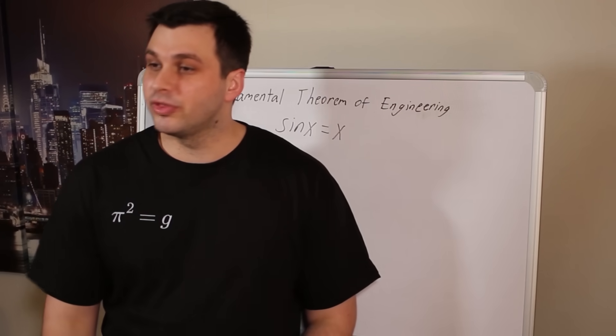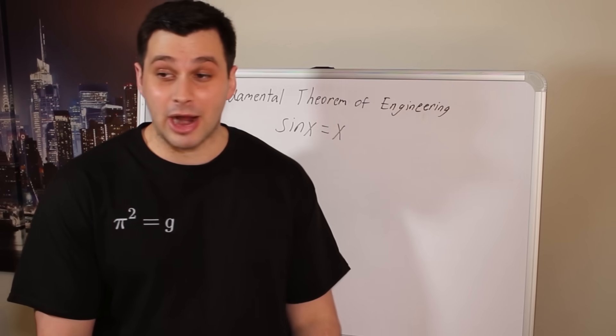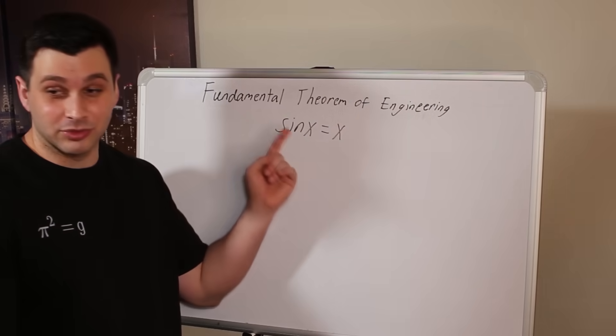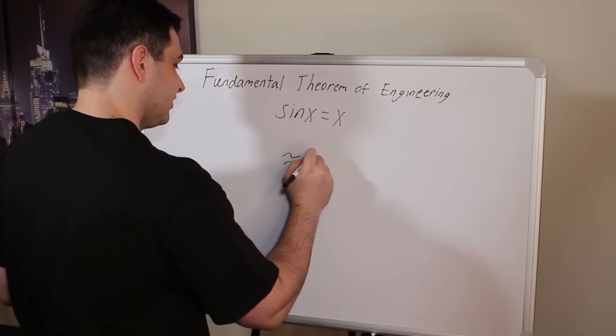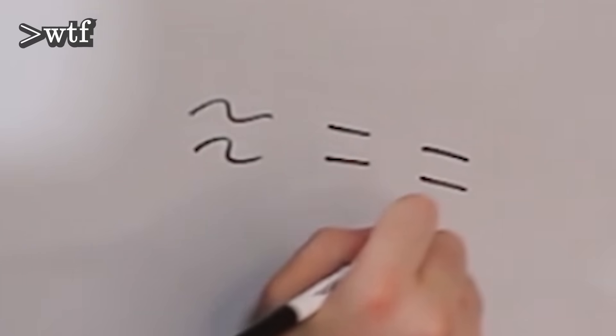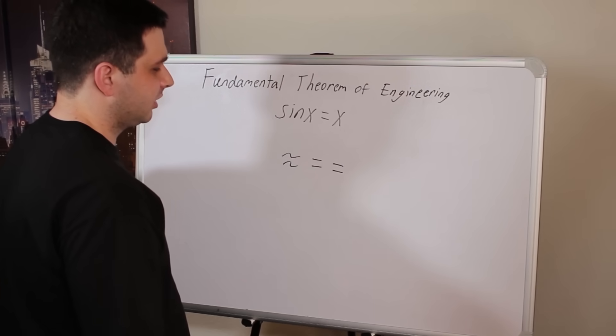Last time we proved the fundamental theorem of engineering and can now use the powerful fact that sine of x equals x. Professor, you probably meant to say it approximately equals x, and only for small angles. And by small I mean x being equal to zero. I'm pretty certain I expressed my doubts about the validity of this theorem already last time. But in this class, approximately is the same as equals. Well, approximately. Not really convincing, not gonna lie.